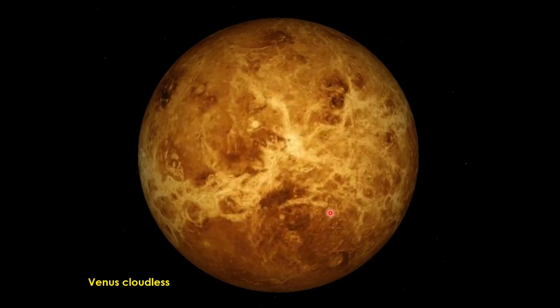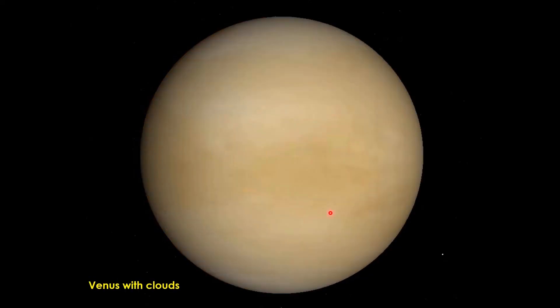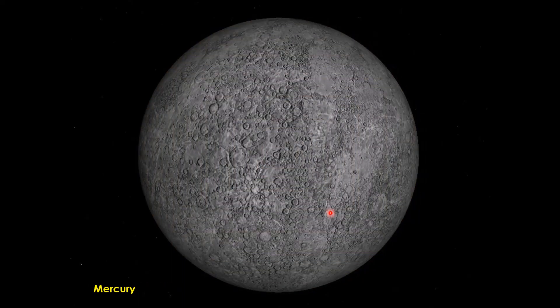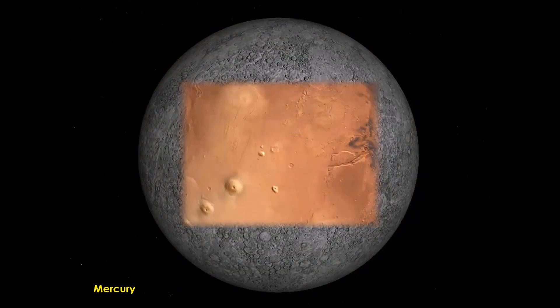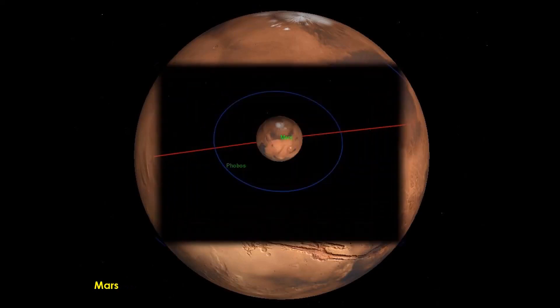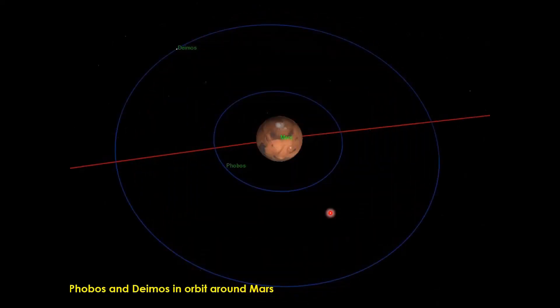This is a photograph of Venus when cloudless, and this is Venus with clouds in place. Now this is Mercury, and this is Mars. Phobos and Deimos are the moons orbiting Mars — you can see them here.